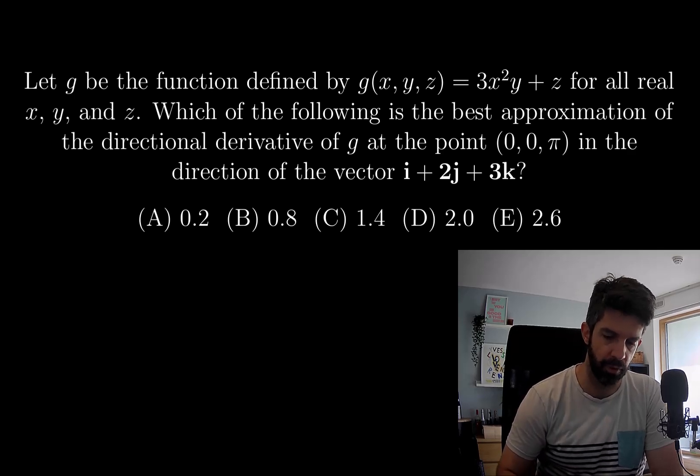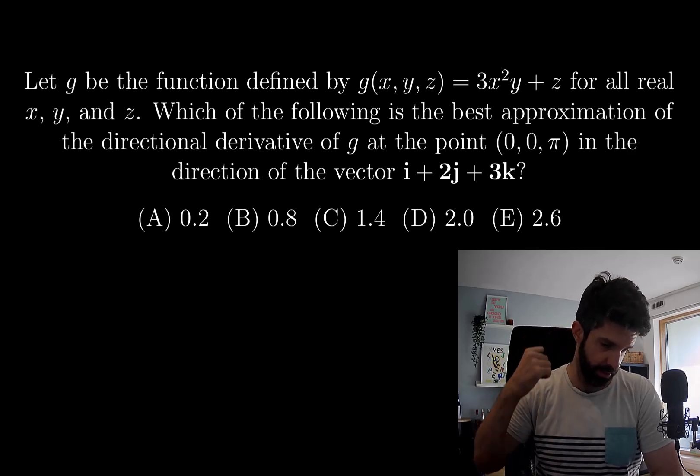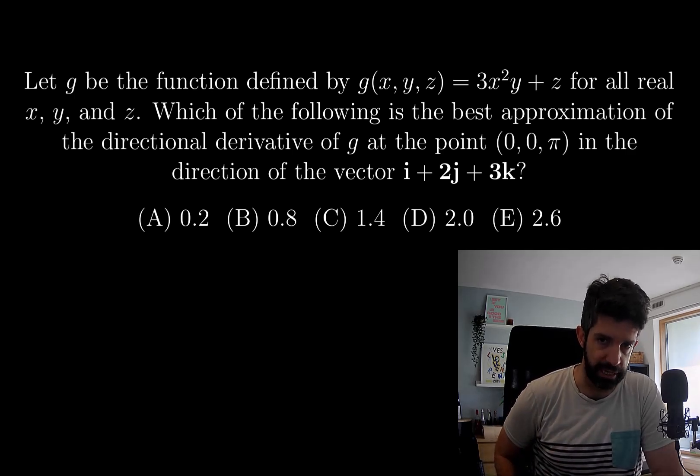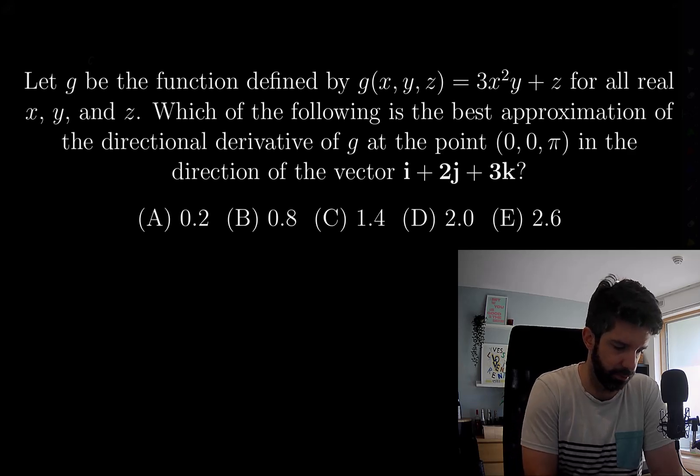Okay, so I think the way I'm going to approach this is just write out, compute the actual directional derivative of g at this point, substitute what the point is and then just numerically figure out what the closest thing is.